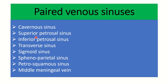The paired venous sinuses are: cavernous sinus, superior petrosal sinus, inferior petrosal sinus, transverse sinus, sigmoid sinus, sphenoparietal sinus, petrosquamous sinus, and middle meningeal vein. These are all the paired venous sinuses.